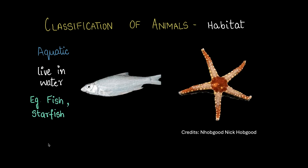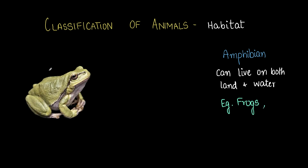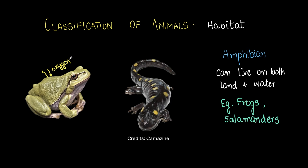Next are amphibians. Frogs are a great example — they can breathe through their skin, exchanging gases through tiny pores. Salamanders also breathe through their skin. Frogs and salamanders can breathe both on land and underwater. That's not the case with animals like crocodiles, which usually stick their snout above the water so that they can breathe.